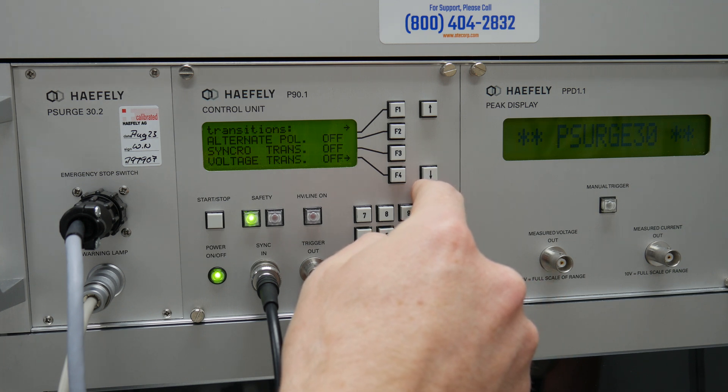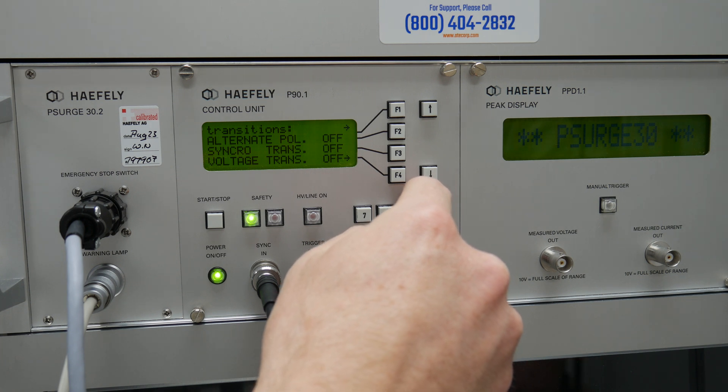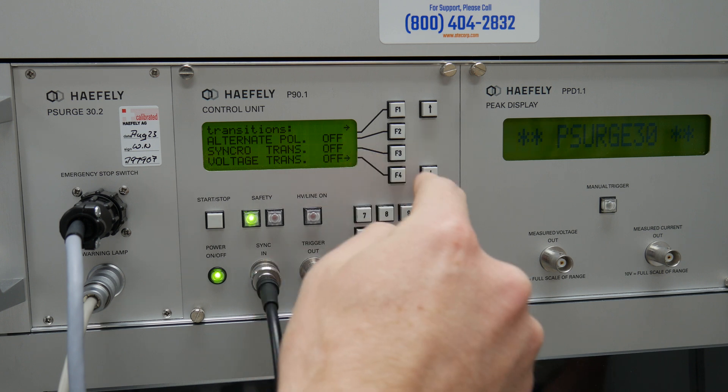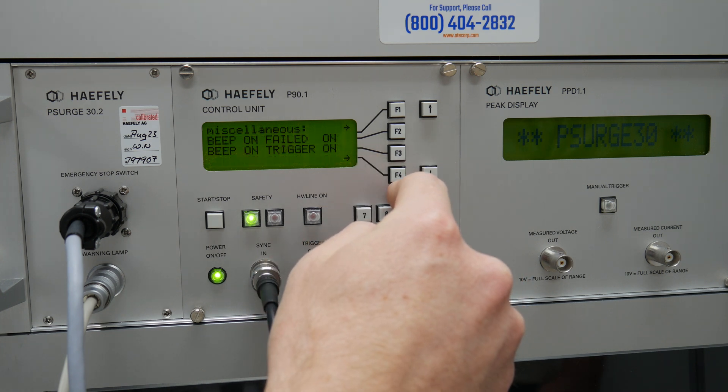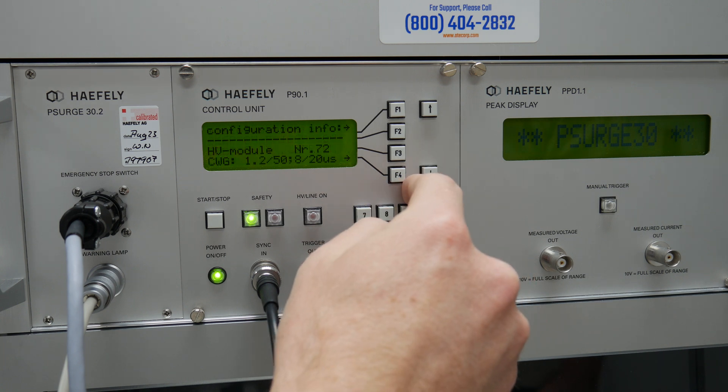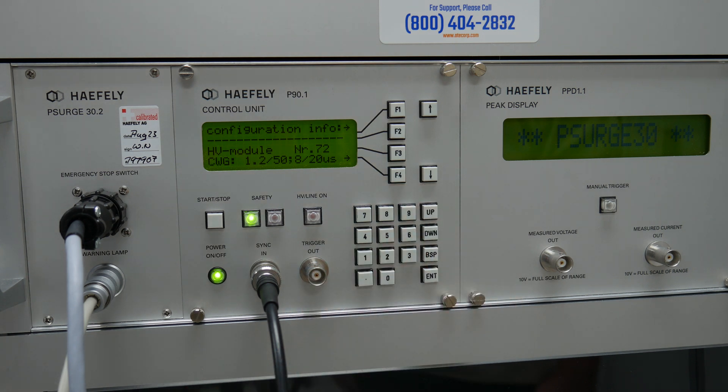And there's also a way to program transitions for your voltage levels or your change in synchronizations and alternating polarities from positive to negative. And other things such as beeping on fail or trigger which we'll keep on. And here's general info on the unit.